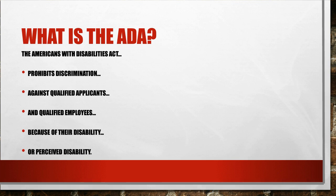The ADA prohibits discrimination against qualified applicants and employees because of their disability or perceived disability. That is not to say that just because somebody is disabled you can't fire them, or that you have to hire every disabled person. This is to say you cannot hold that against them — it cannot be part of the decision framework when you make decisions on hiring, terminating, suspending, or disciplining. It does not give a free pass based on disability, whether known or perceived.